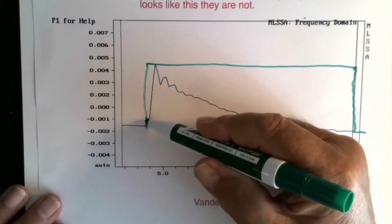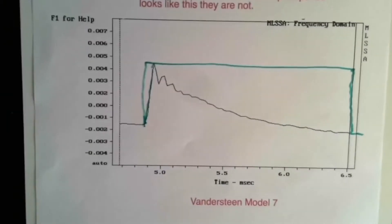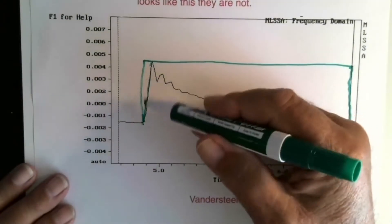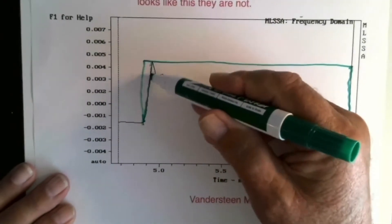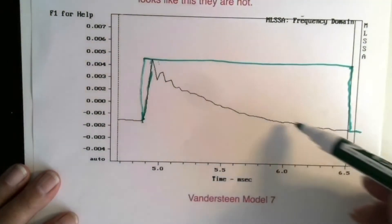The reason the line leans here is because that speaker doesn't go up to the megahertz in frequency response. Because it has some point where it rolls off, you get this slight lean to it. Then as it goes down here we'll see to the end where the test ends.